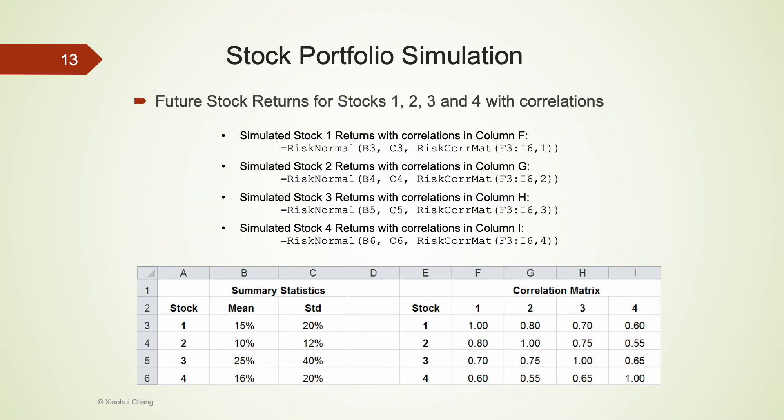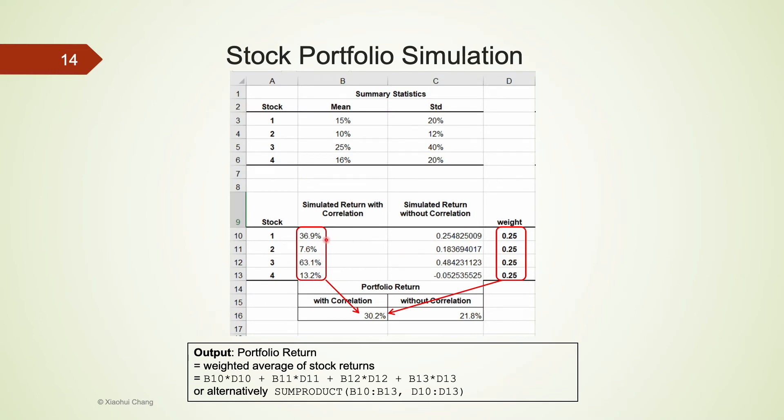For this simulation, the probabilistic inputs are just the returns of these stocks, which we will use risk-call-mat to generate. Please pause this video and examine the arguments in the risk-normal and the risk-call-mat functions. Once we have the individual stock returns, the returns of the portfolio can be easily computed using the average of those four stocks. This is because we invest equally in all stocks.